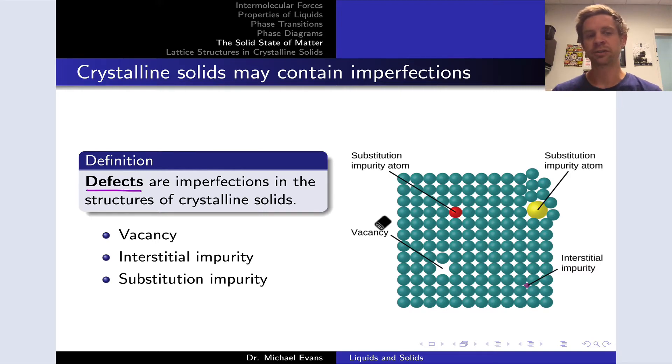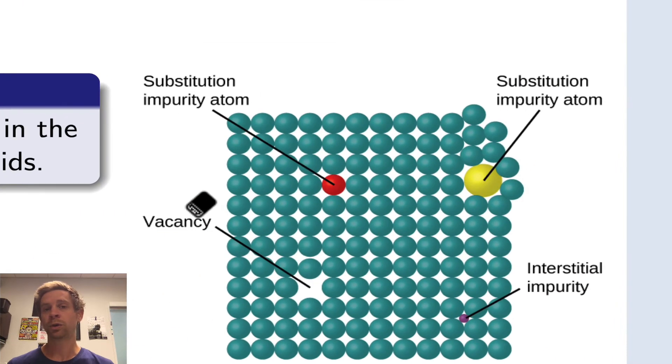Defects are imperfections in the structures of crystalline solids. And there are three types of defects that we're going to want to pay attention to in crystal structures. There are, first of all, vacancies.